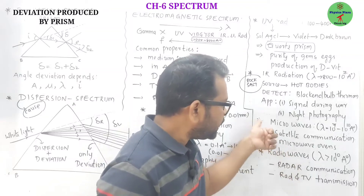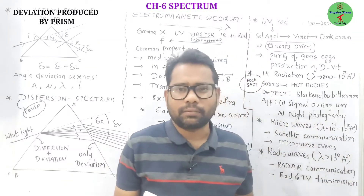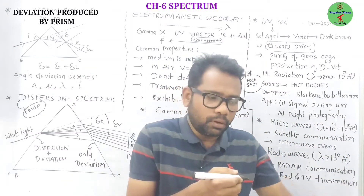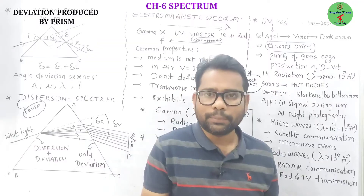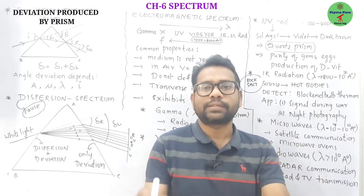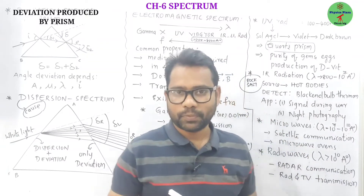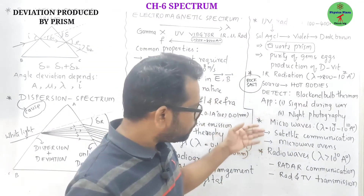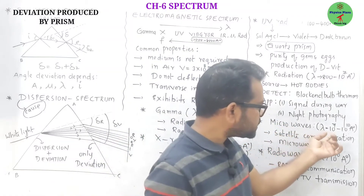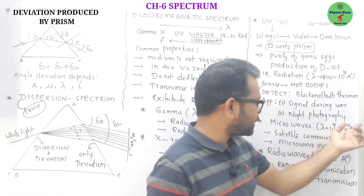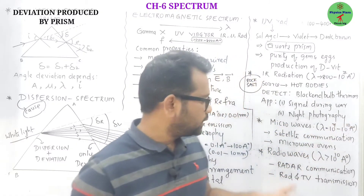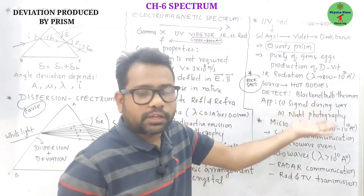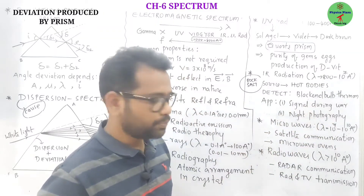Infrared radiations are also used in night photography and in situations where there is mist and fog, because they scatter the least. The microwaves have a wavelength range of 10⁷ to 10¹⁰ angstroms. These are used in satellite communication and in microwave ovens.